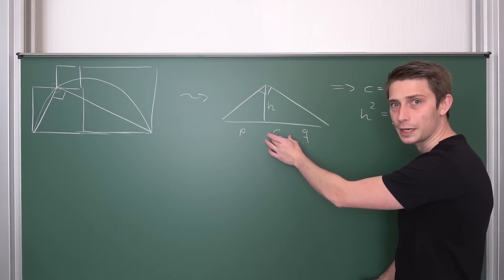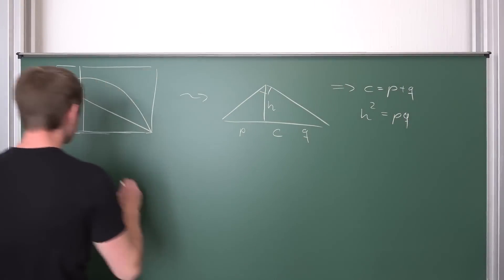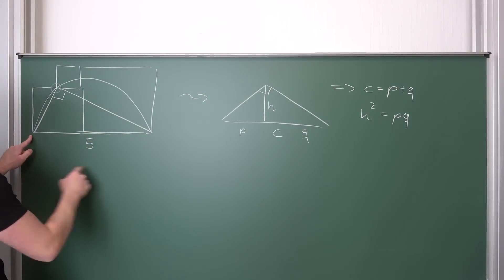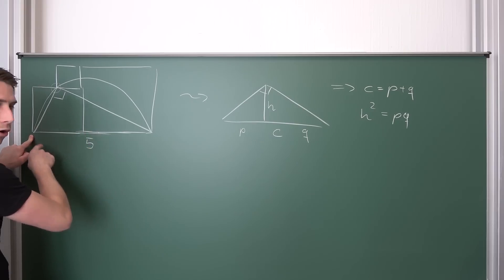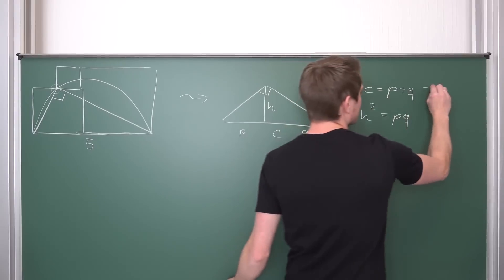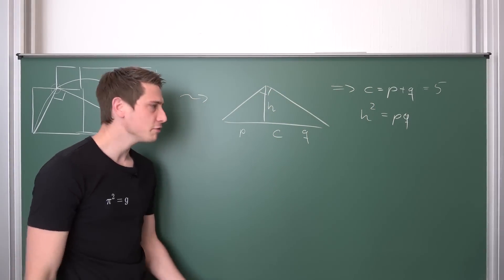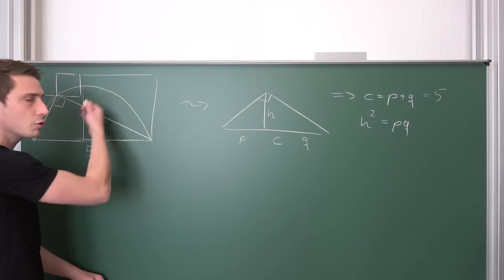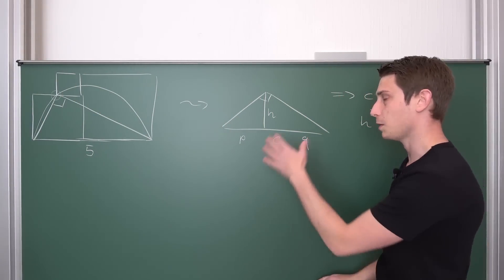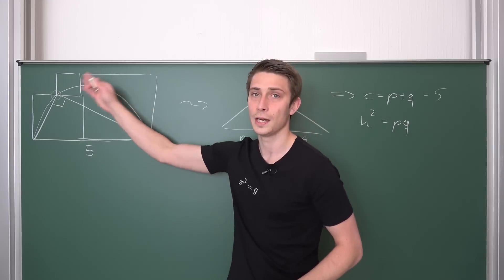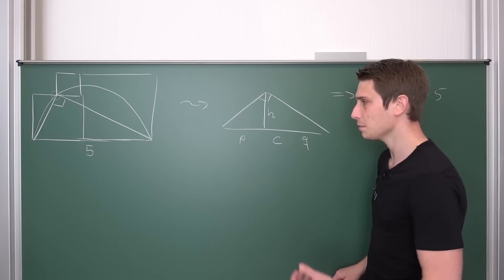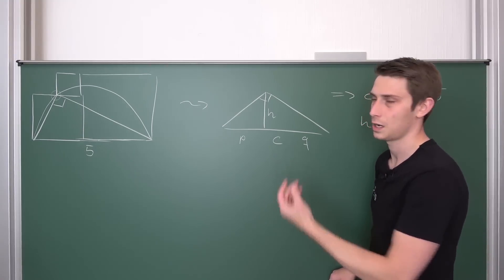Our C that we have here is exactly 5. This is our hypotenuse, the basis of those two squares combined, meaning this is 5. Now we have a lot of information given but we need to solve for the total area of this construct.